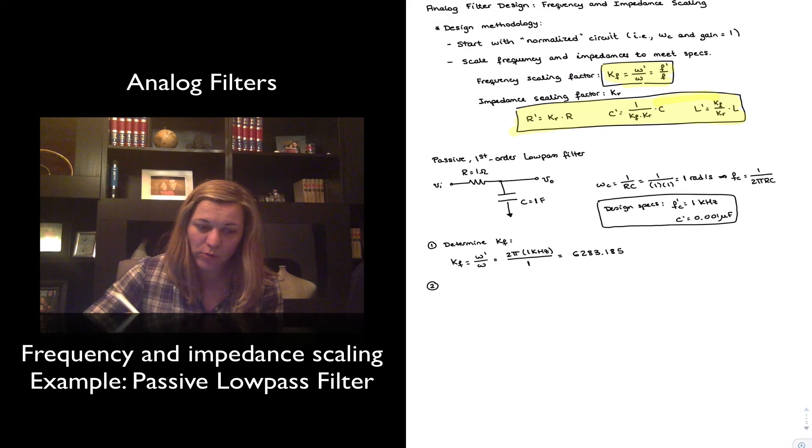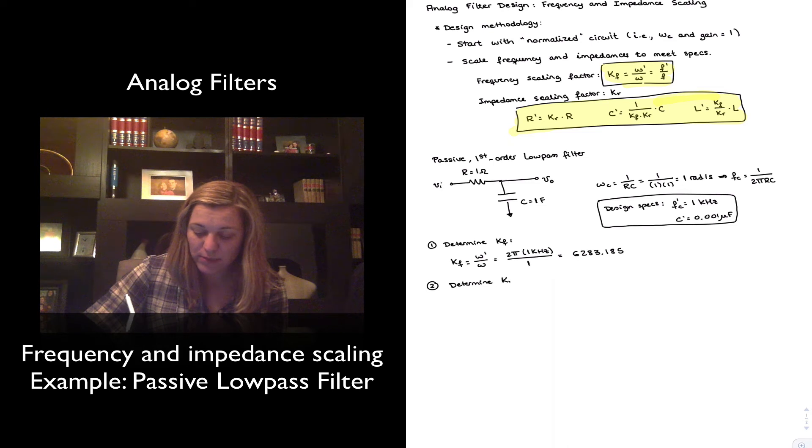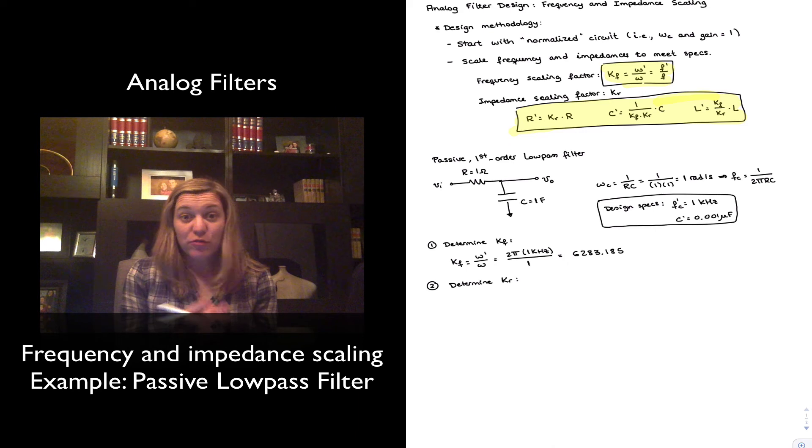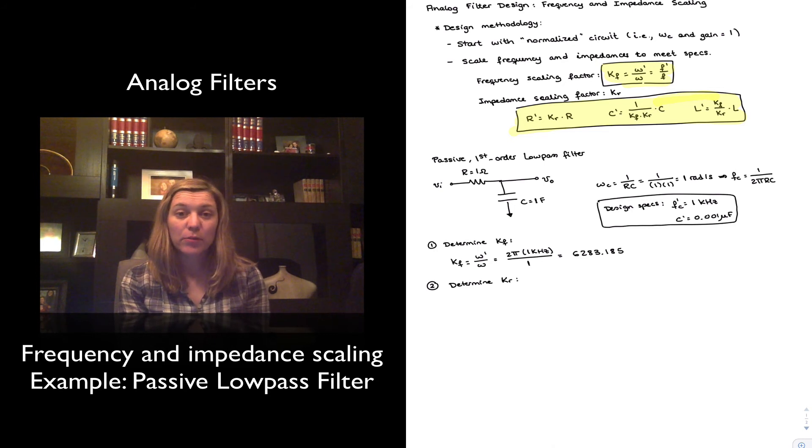Second step, I'm going to determine my impedance scaling factor, k sub r. And again, normally, I might have to make an assumption of what capacitor value or what inductor value I would like to use. Typically, resistors come in a higher variety of values or higher ranges of values than inductors or capacitors. And so if we have to set one a priori, we're typically going to try to set either the cap or the inductor and then figure out what the resistor values need to be.